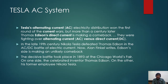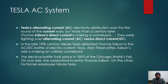The decisive battle took place in 1893 at the Chicago World Fair. On one side was the celebrated Thomas Edison; on the other was his former employee Nikola Tesla. So that was a little story about the AC versus DC debate.